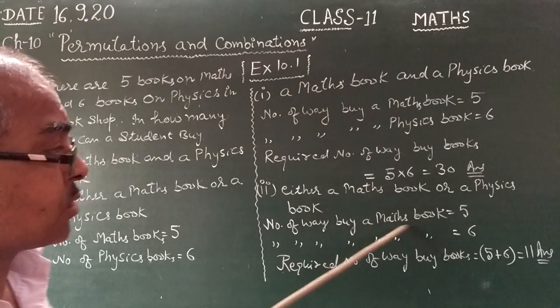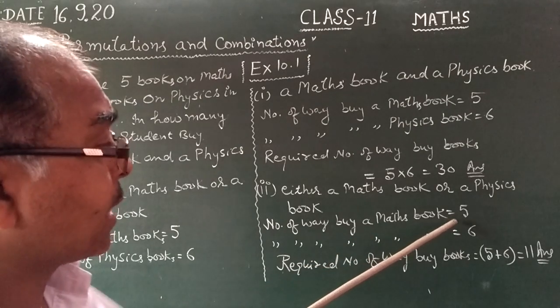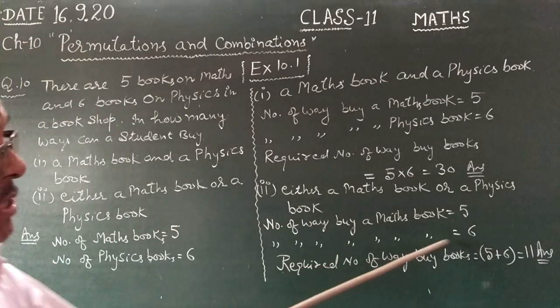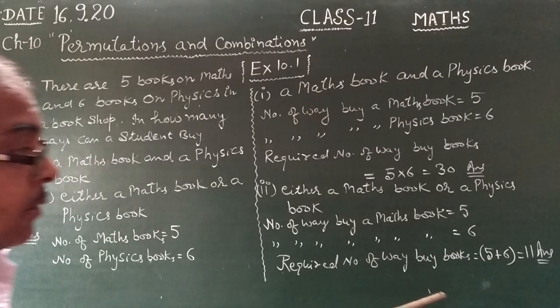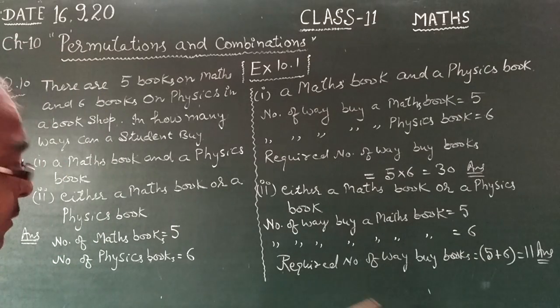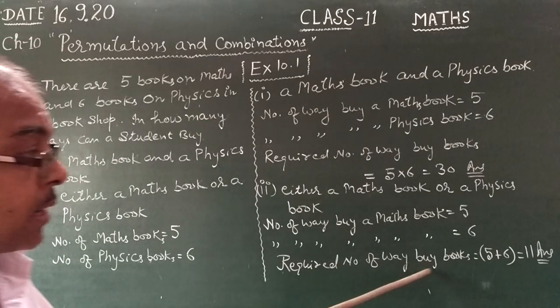I have to give 360. Actually, you have to give 360. This is the required number of ways to buy books.